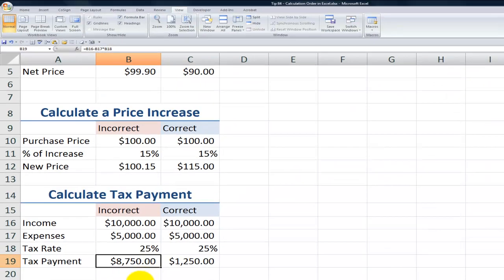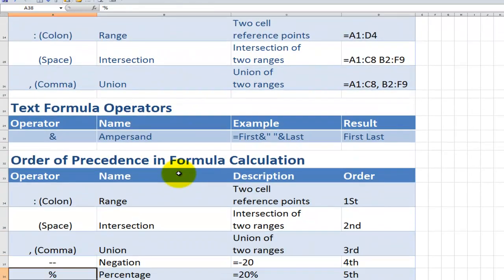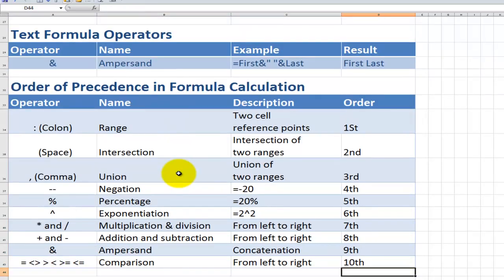Now, I have put together a little chart where I go through and show you each of the operators that Excel performs. I have an example and a result, and I also give you the order of precedence. So you can see the first, second, third, fourth, fifth, down through the tenth, the order of precedence.